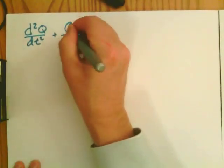d²Q/dt² plus Q over LC equals zero. Let's write that down one more time. And we have to find solutions to this equation.